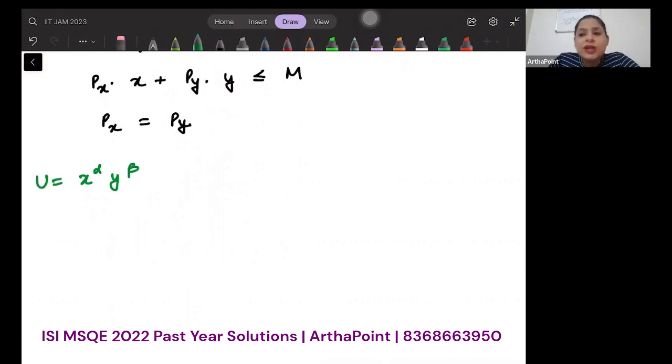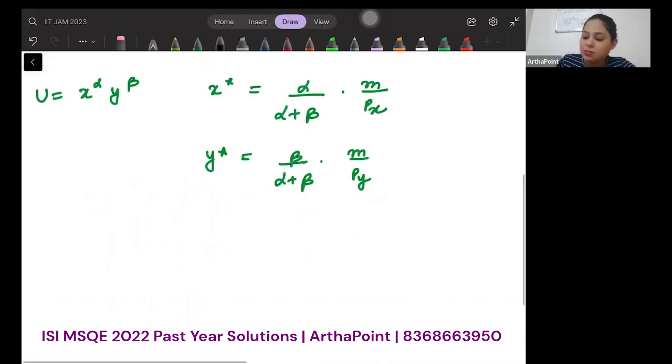When my utility function is like this, what was x* and y*? x* was α/(α+β) · m/px, and y* was β/(α+β) · m/py. Now, in this case, if I talk about my utility function...